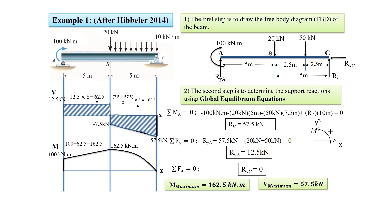According to the constructed shear and moment diagrams, the maximum shear and maximum moment in this beam are 57.5 kilonewtons and 162.5 kilonewton meters, respectively. The maximum shear is located at point C, while the maximum moment is located in the middle of the beam. These magnitudes and locations are important information needed to properly design a beam. We managed to solve this problem using the graphical method alone; however, in most problems we need to combine the equation method with the graphical method.